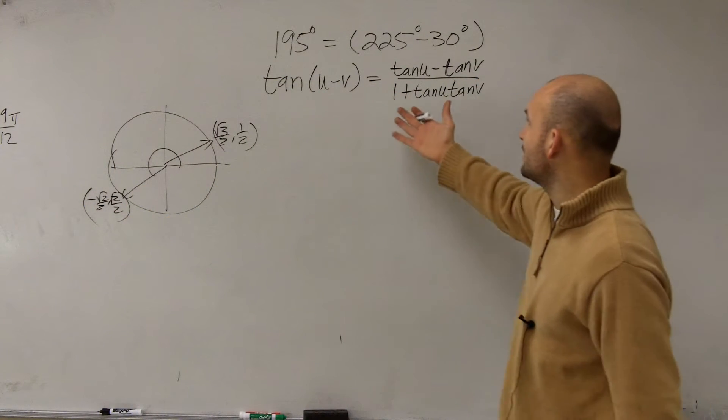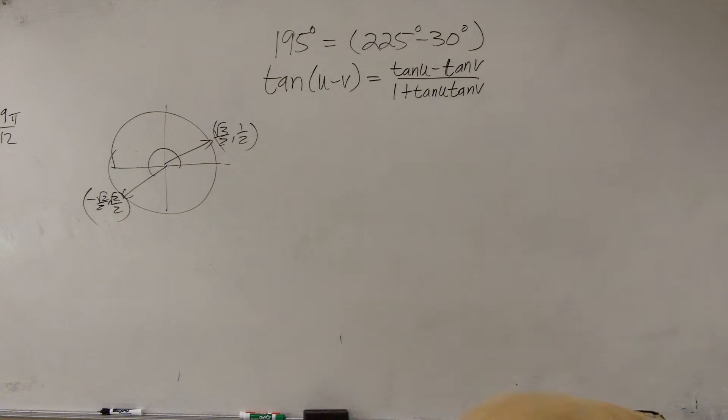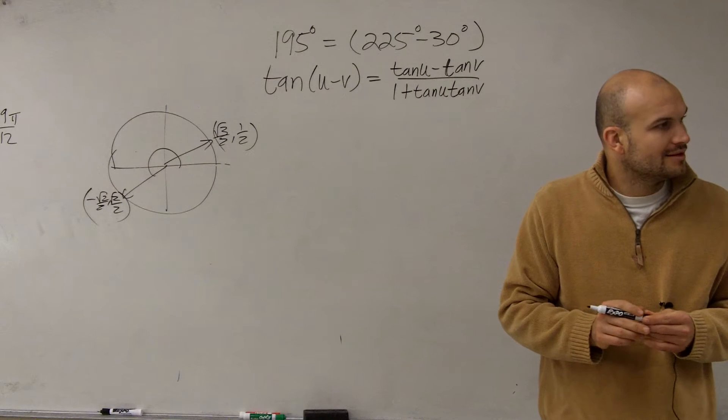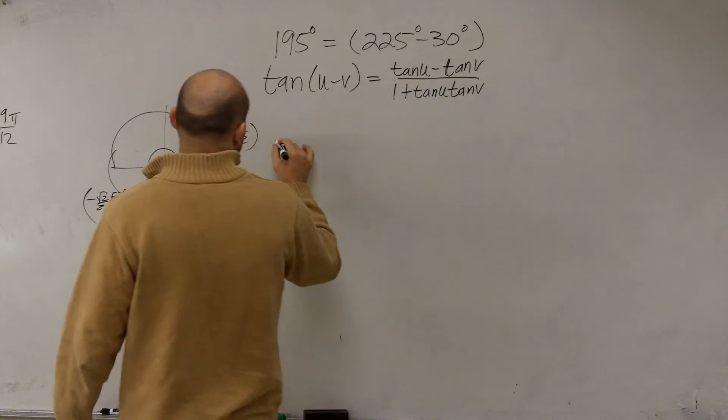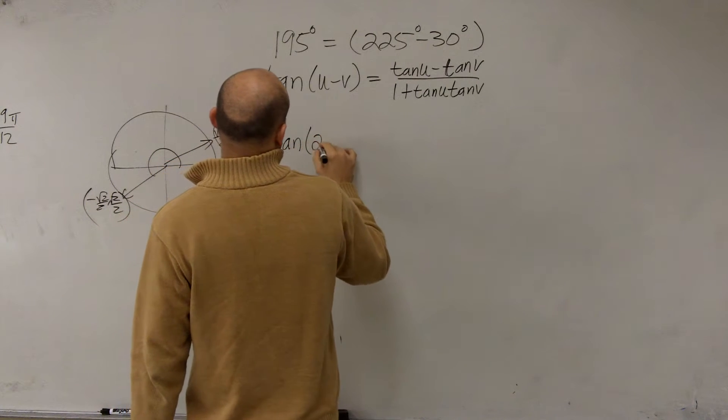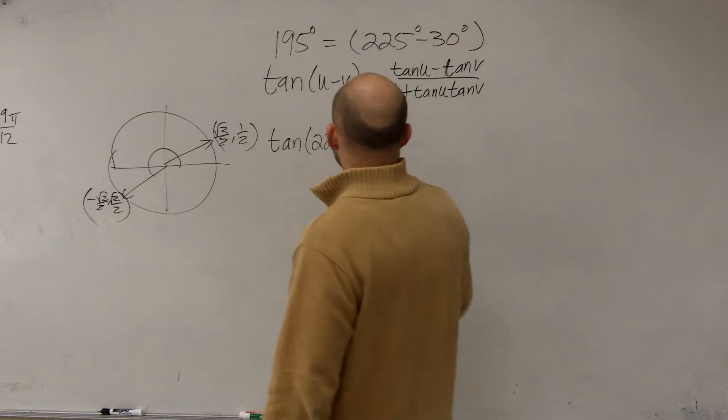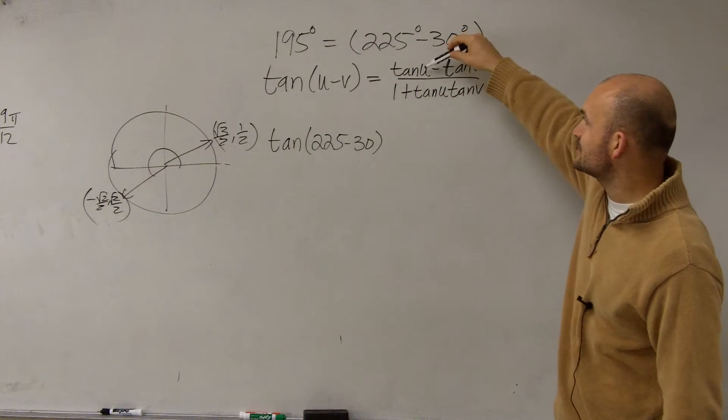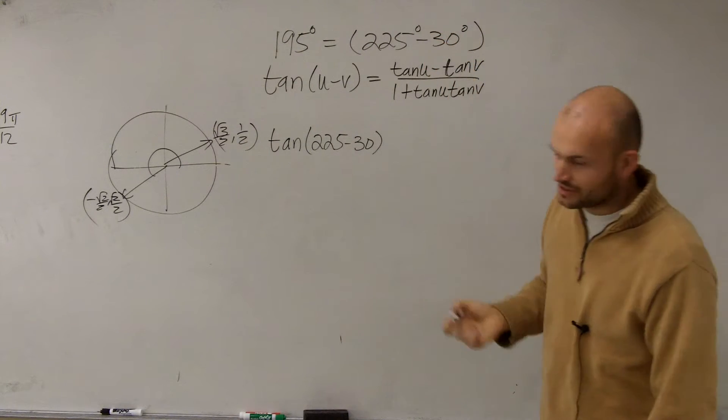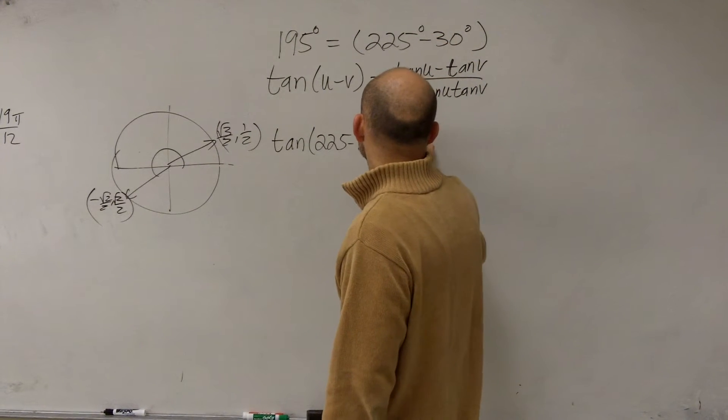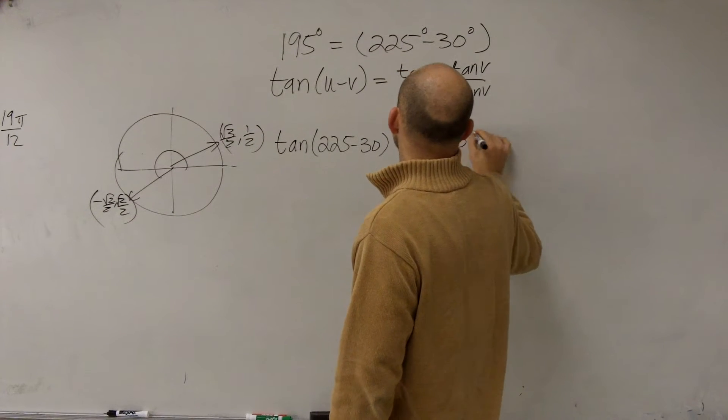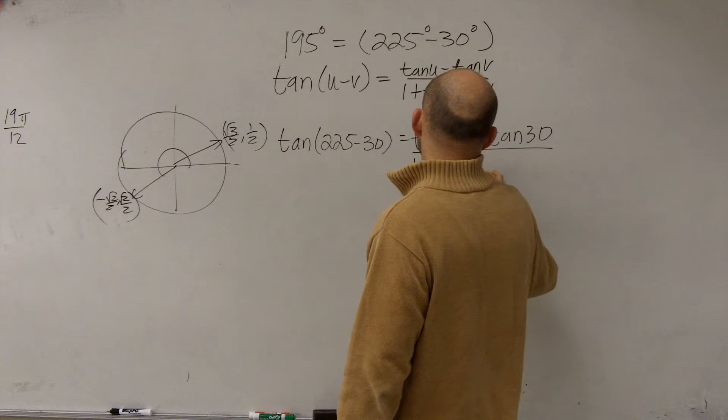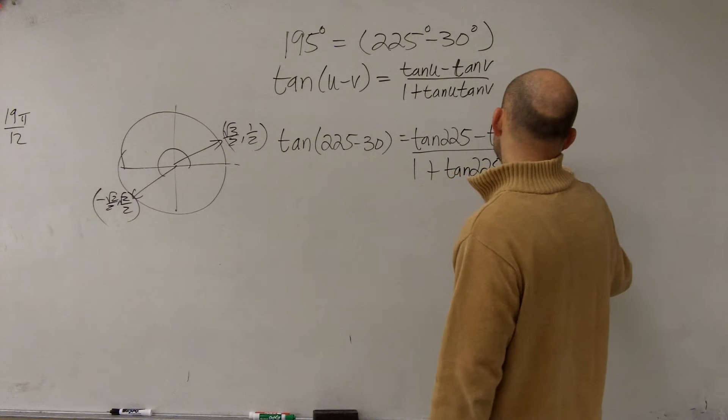Okay. So now, ladies and gentlemen, we're just going to plug in our formula. Same thing, we understand what our U minus V is, so now we're going to apply it. So what we have is tangent of 225 minus 30. And if you guys don't mind, this is going to take a little bit of work, so I'm actually going to apply it. I'm just going to separate it.